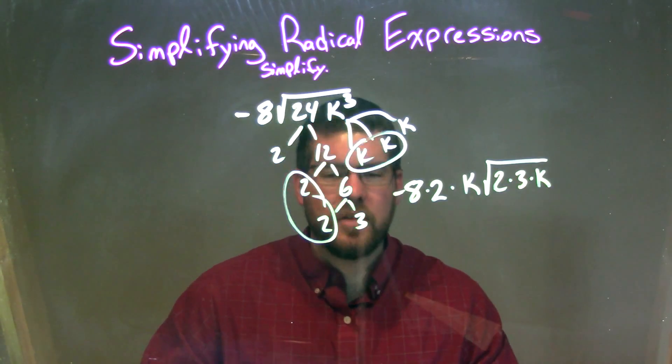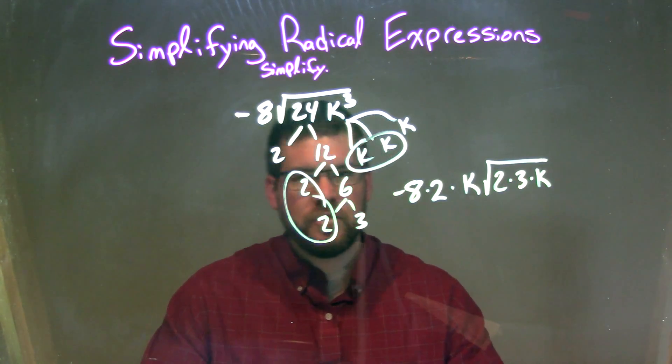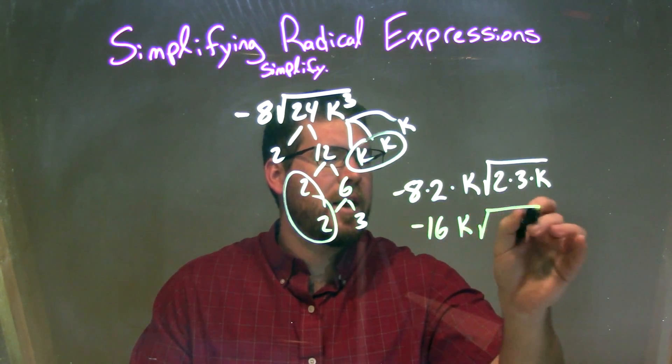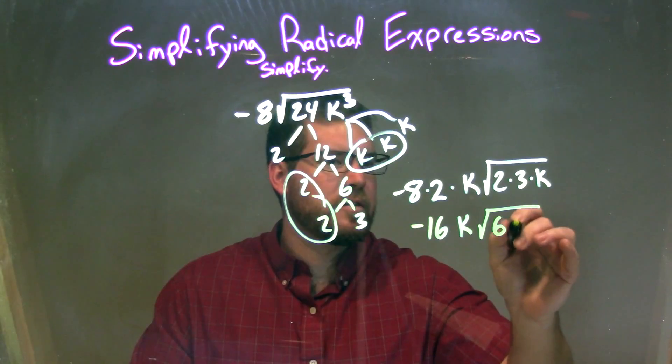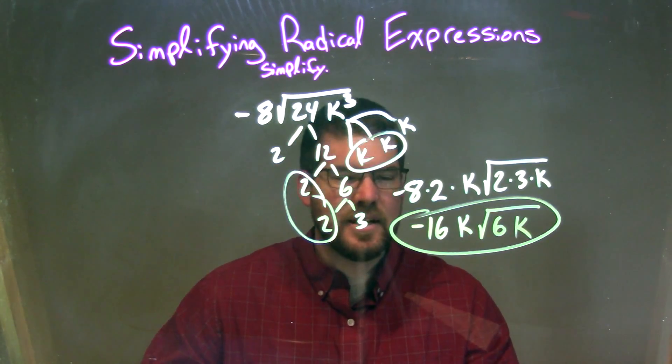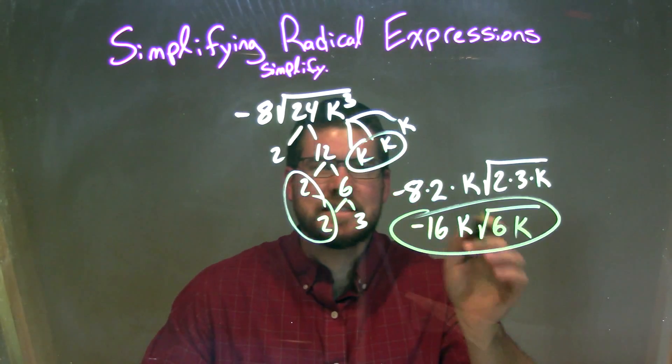So now let's simplify this. Negative 8 times 2 is negative 16, k. So negative 16, and then k times 2 times 3 is 6, and just the k on the inside, and there we have it. Our final answer is negative 16k times the square root of 6k.